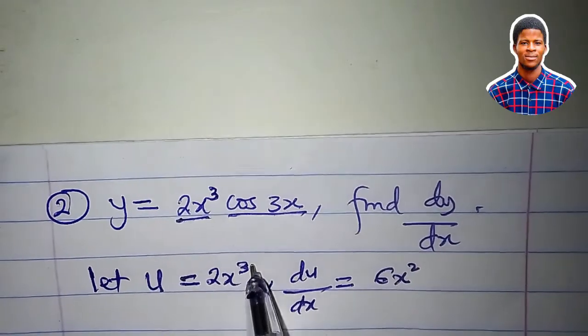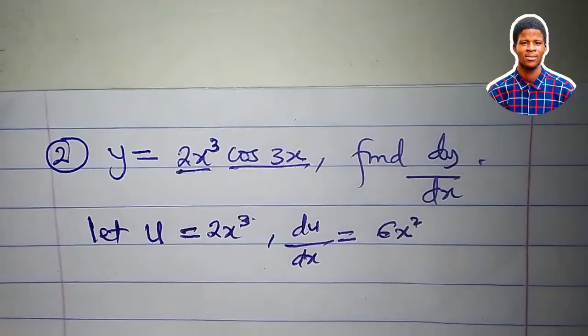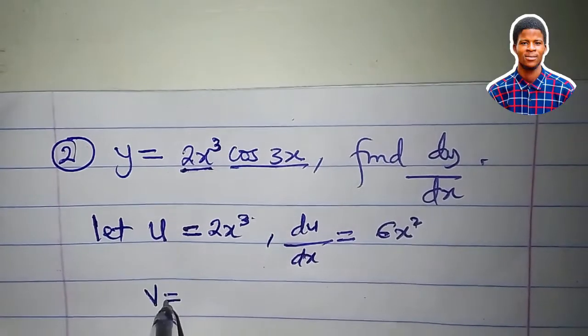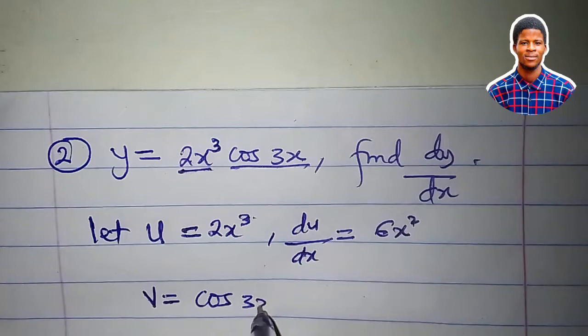That would be 6x². 3 times 2 is 6, 3 minus 1 is 2. So v would be equal to cos 3x.